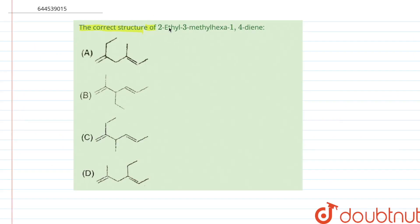The correct structure of 2-ethyl, 3-methyl, hexa-1,4-diene is.